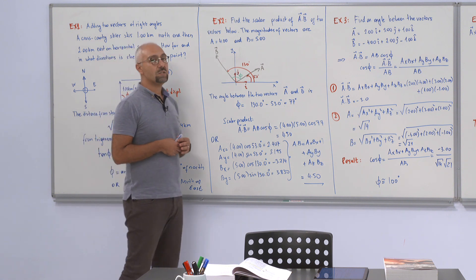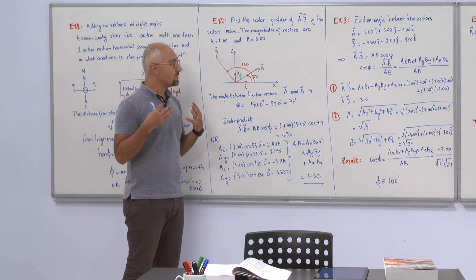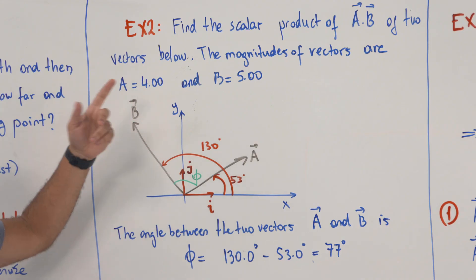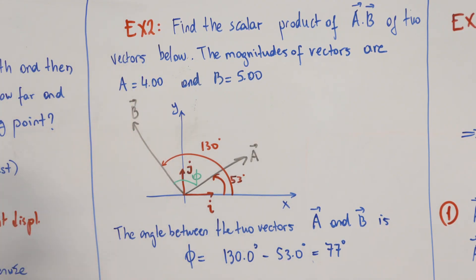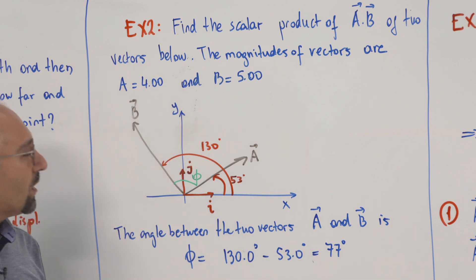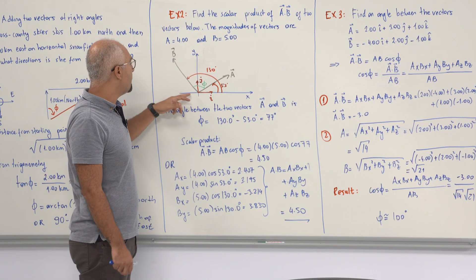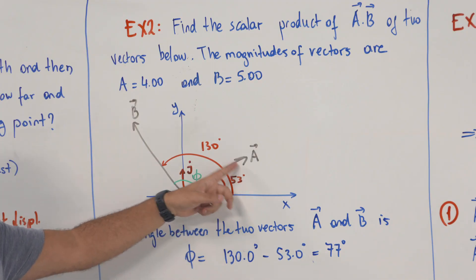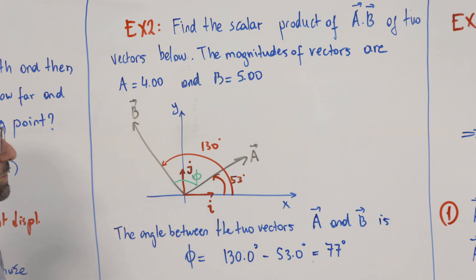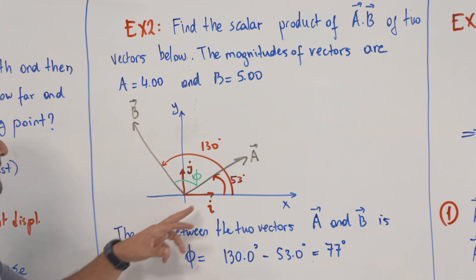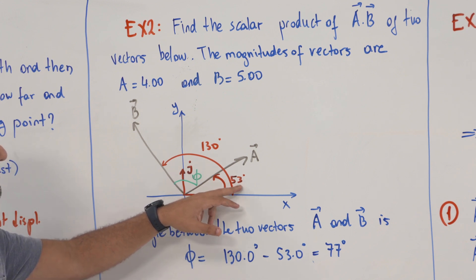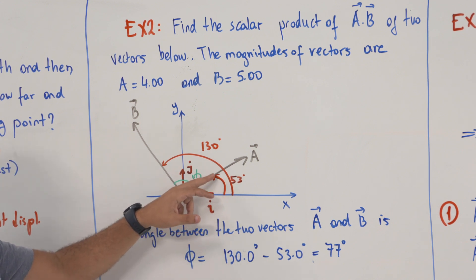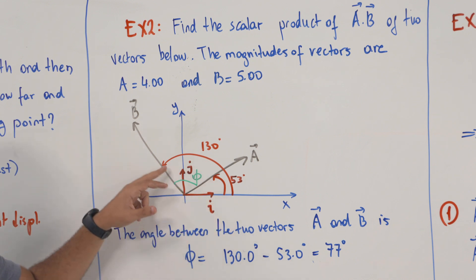The second example covers the scalar product. The question is to find the scalar product A dot B of two vectors, and calculate their magnitudes. Looking at the chart, we have the x-axis and y-axis, with vector A and vector B. First, we identify the angles: the red line shows vector A is 53 degrees from the x-axis.